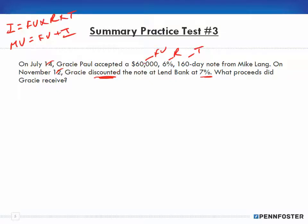We need to figure out how much interest is on the original note: $60,000 times 0.06 (6%) times 160 days over 360. When we do the math, we end up with $1,600 in interest.